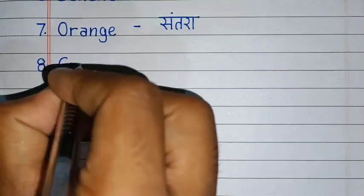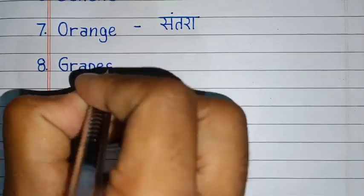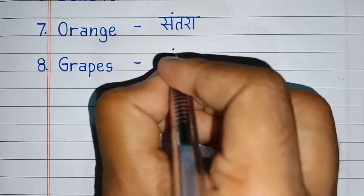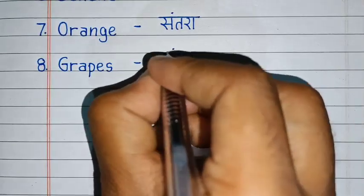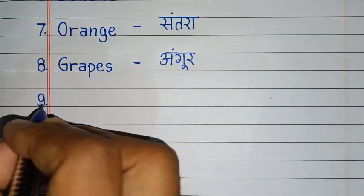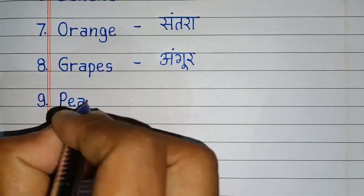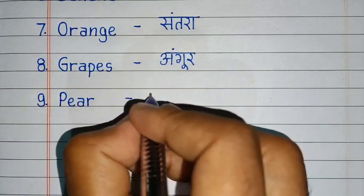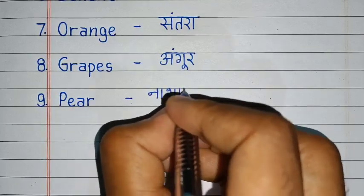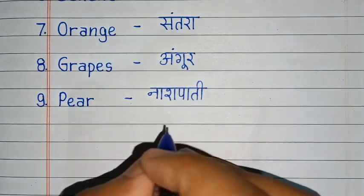G, R, A, P, E, S. Grapes. Grapes means angoor. P, E, A, R. Pear. Pear means naspati.